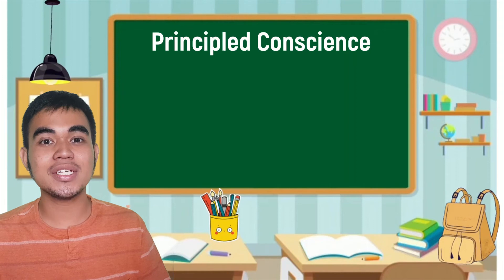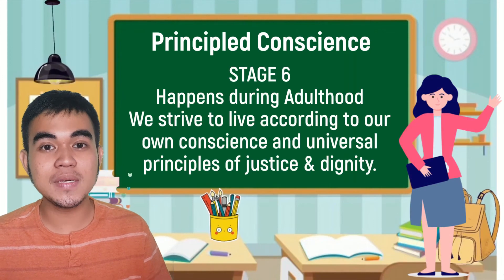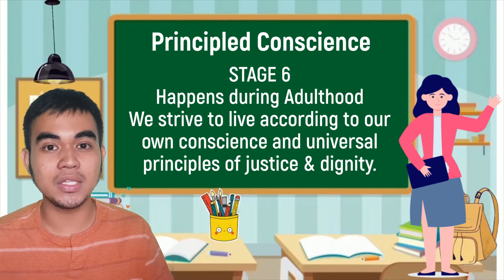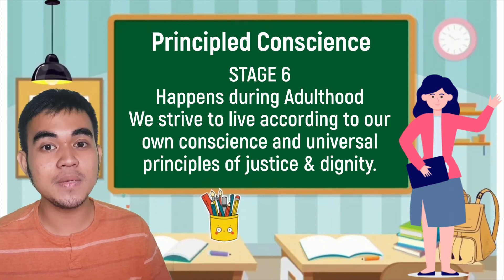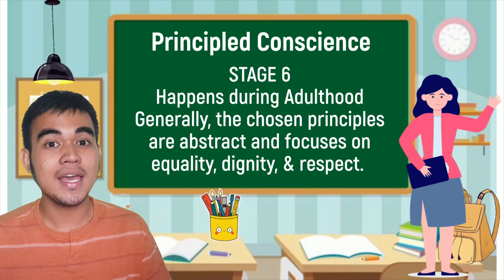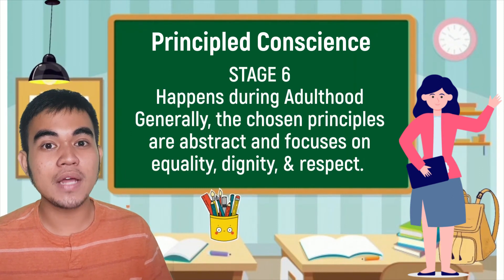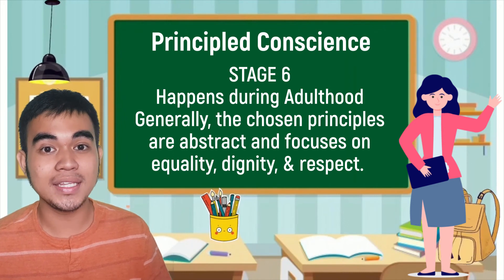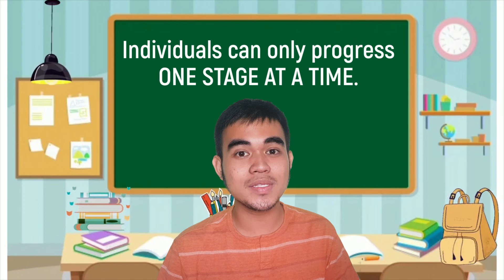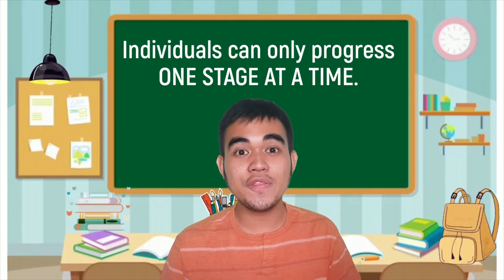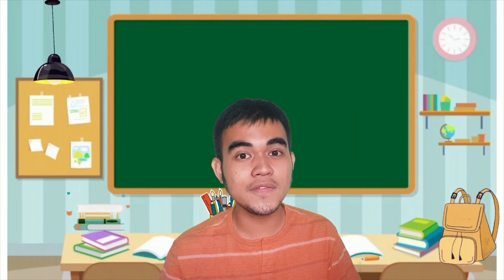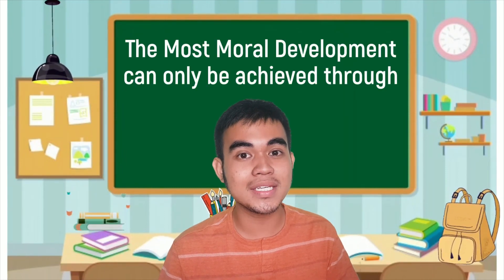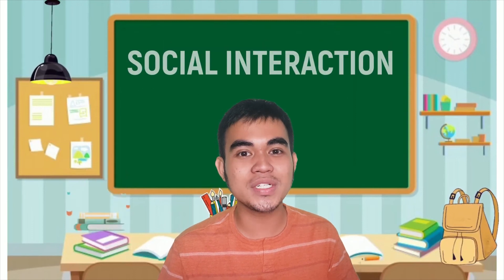After stage 5 follows the last stage, stage 6, which is also known as the principled conscience orientation. It happens during adulthood. At this stage, we strive to live according to our own conscience and the universal principles of justice and human dignity. Generally, the chosen principles are abstract rather than concrete and focus on ideas such as equality, dignity, and respect. Note that Kohlberg believed that individuals could only progress one stage at a time, meaning we cannot jump between stages.